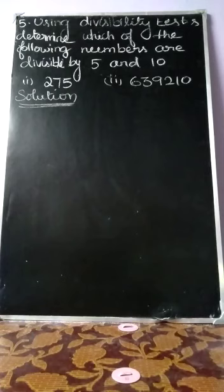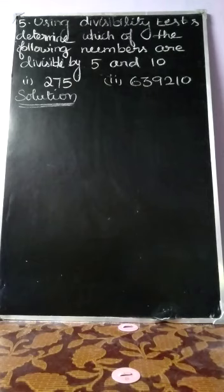Next problem: using the divisibility test, determine which of the following numbers are divisible by 5 and 10. What are the rules? If the ending number is 5 or 0, the number is divisible by 5. If the ending number is 0 only, then the value is divisible by 10.